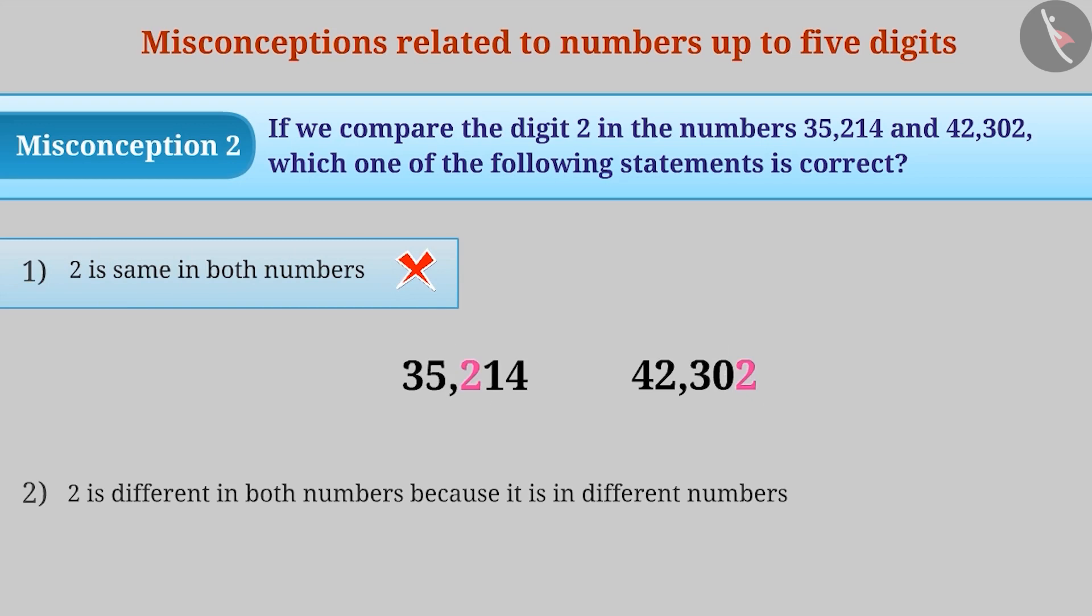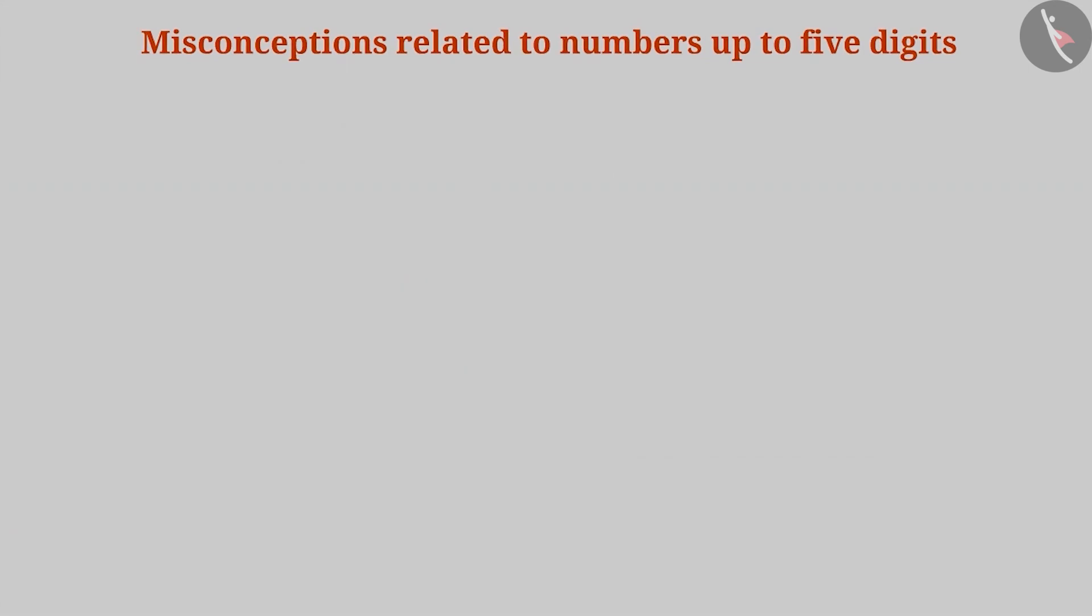Sometimes, it is known that the digit 2 is different in both numbers and the reason behind it is not known. The correct understanding is that the digit 2 has different place value in these two numbers. So, the digit 2 is different in both numbers.